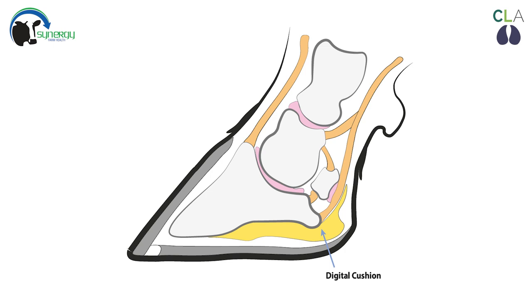If the cow loses weight or body condition, the digital cushion also thins. This thinning often occurs around calving and can be a risk factor for lameness.